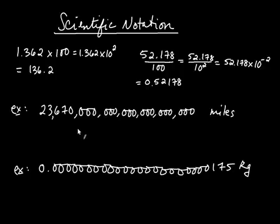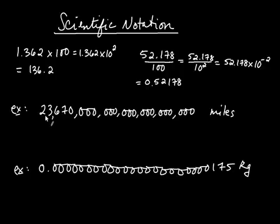And we introduce what's called scientific notation. The way this works is: you imagine inserting a decimal into this number such that you get a number between 1 and 10. So the first question is, where should the decimal go? If you put it here you get 23.67, and if you put it here you get 0.2367 — neither is between 1 and 10. The only place the decimal can go is right there, so 2.367.